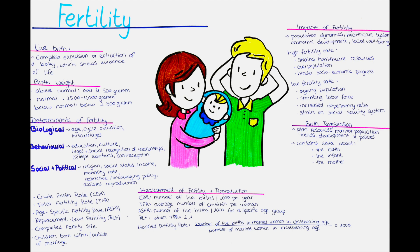Fertility rates vary based on social variables including religious affiliation, social class, region, and country. Religious groups often have distinct beliefs and practices related to contraception and abortion. Social class also plays a role, with lower socioeconomic classes tending to have higher fertility rates. Economic factors, access to education, and employment opportunities can impact family planning choices. Geographical location is another factor, as people in rural areas often have higher fertility rates compared to urban areas, due to cultural norms, access to healthcare, and limited availability of contraception.